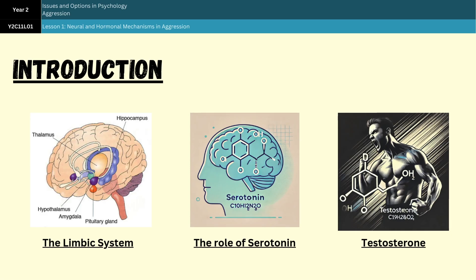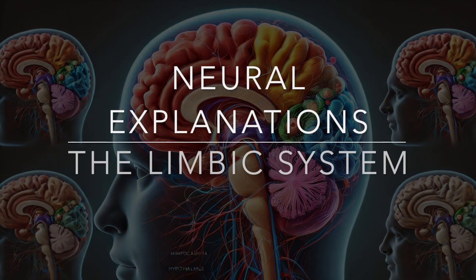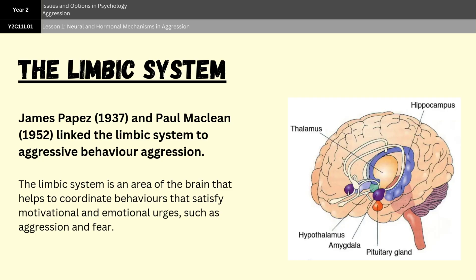I'm also going to evaluate the concepts after each bit of outline. Then we'll finish up with a couple of generic evaluation points that are useful for all biological explanations, not just the ones in this video. Our first neural explanation is the limbic system, which was linked to aggressive behavior by Pape and McLean in the mid 20th century.